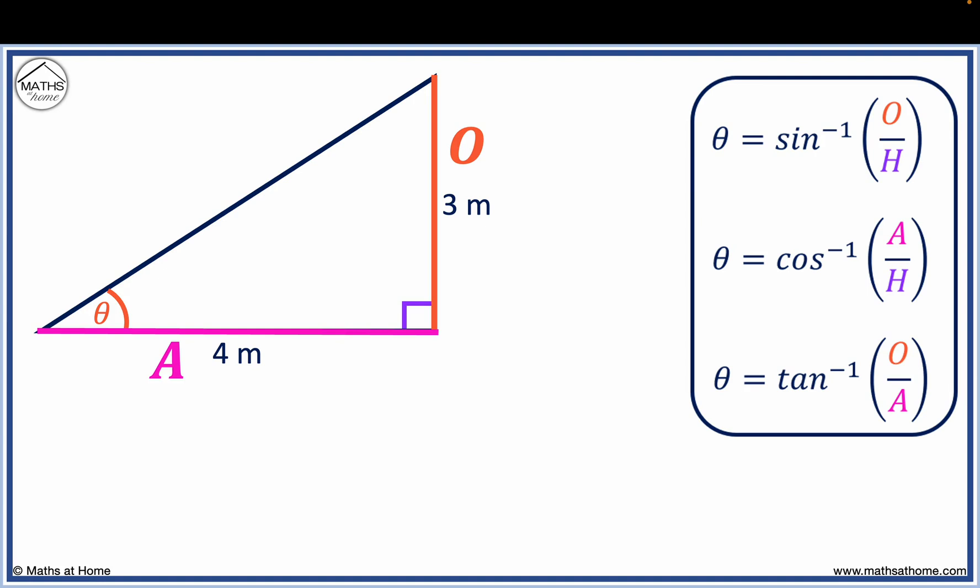Now we can choose the correct equation as it must contain an O and an A, because we know the opposite and adjacent sides. The only equation that contains both an O and an A is the tan equation.